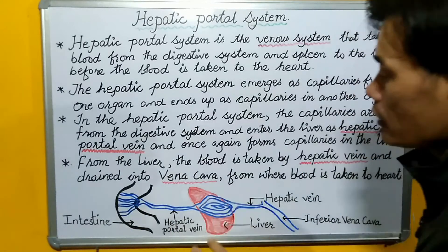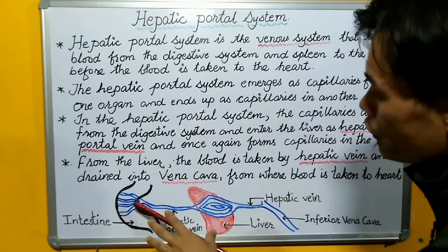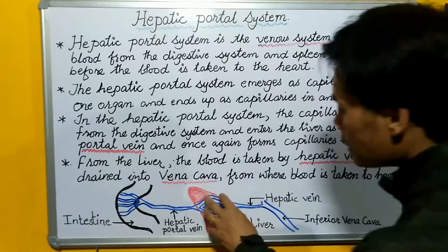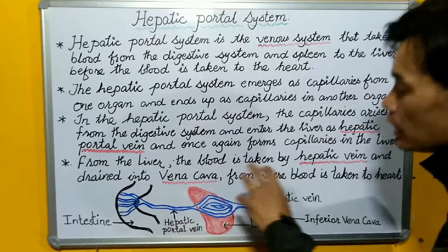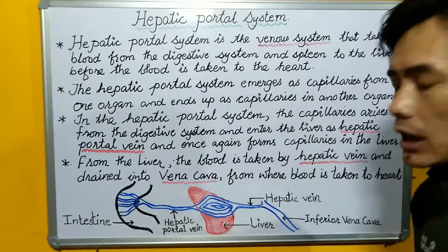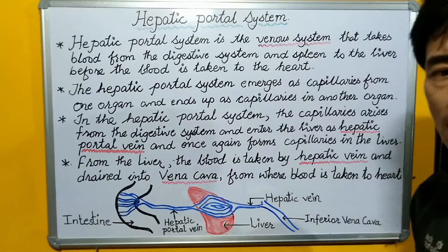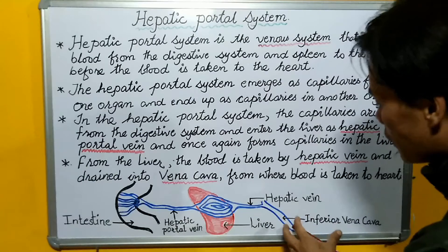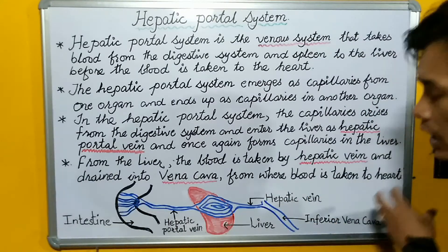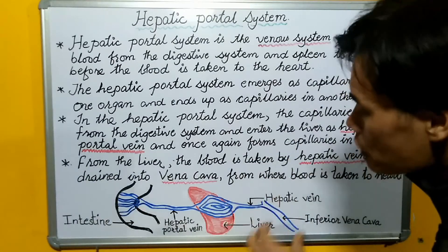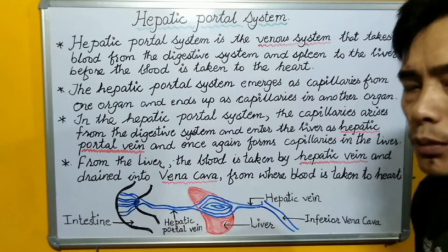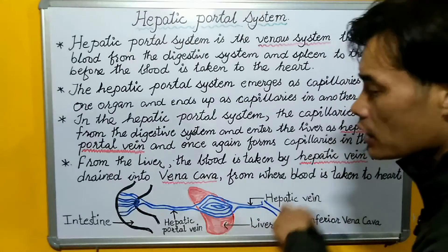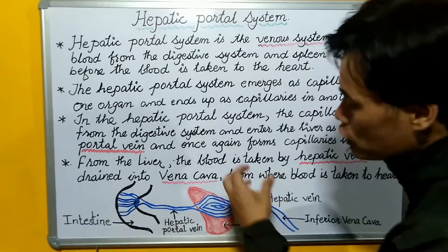When the blood is moving from the digestive system to the liver and ultimately reaches the liver, the liver will do the selection of the materials that have to enter into the normal circulation, that is the vena cava. And certain substances need to be detoxified, certain substances have to be converted and stored in the liver.